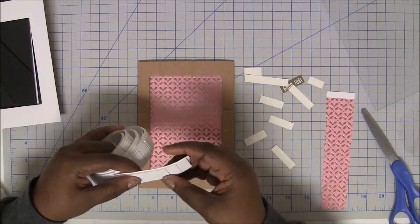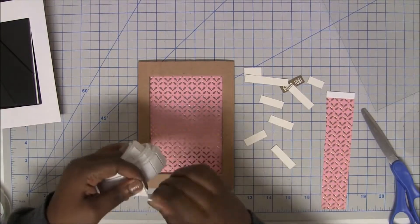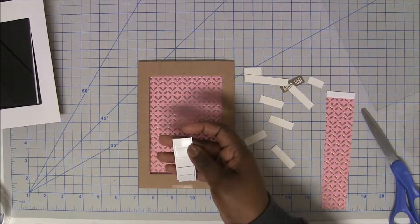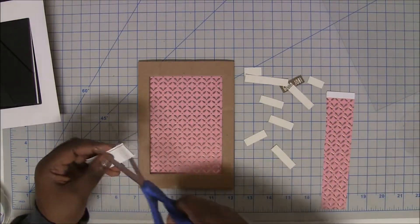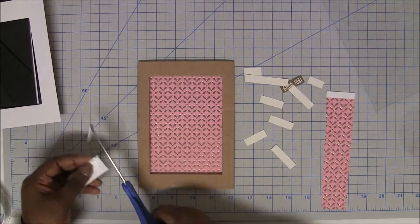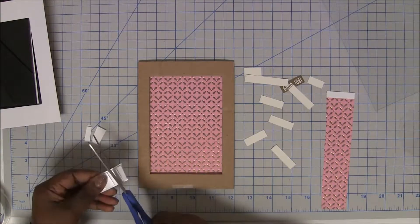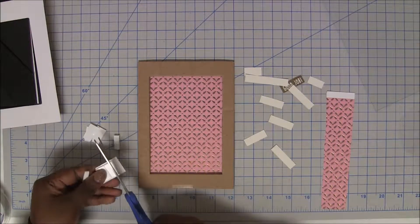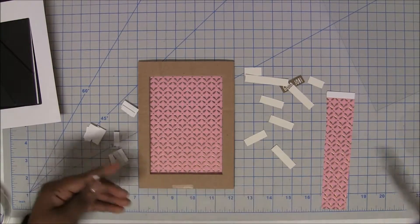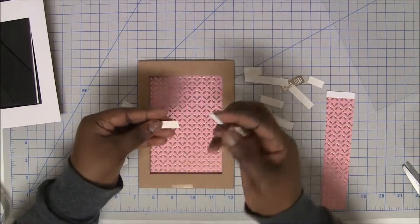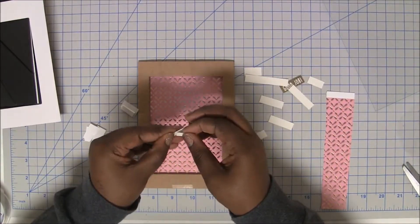All right. So I'm going to take about five of these. And what I'm going to do is I'm going to cut my mounting tape in half because it's so thick. And then we're going to add a piece of the mounting tape to the back of each sticker.